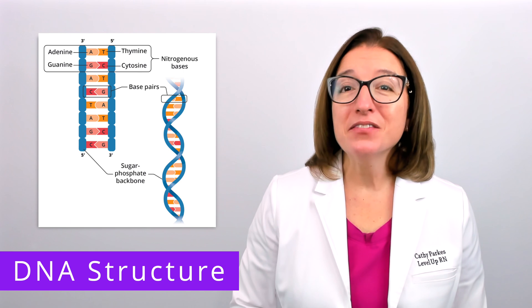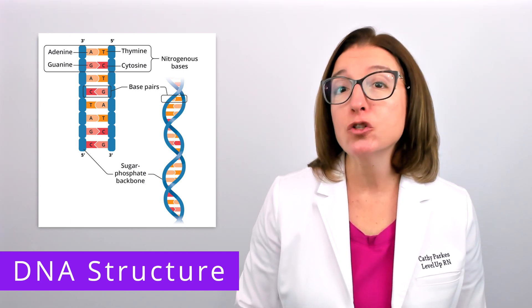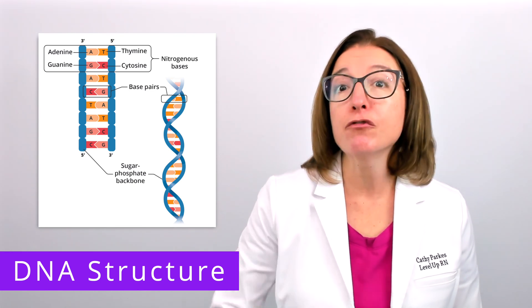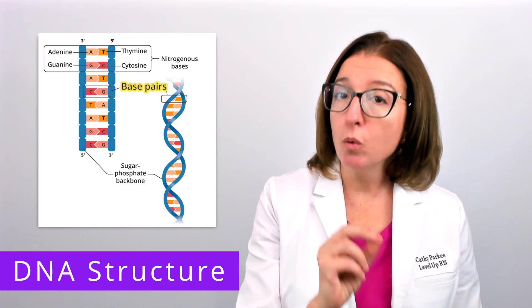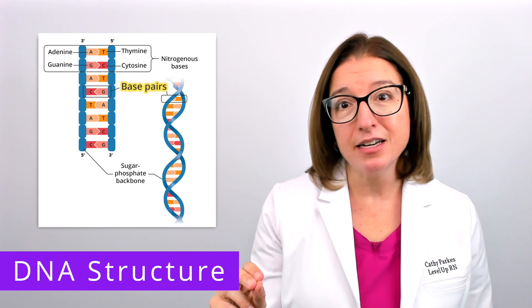The two strands of DNA wind around each other to form a double helix, which resembles a twisted ladder. The rungs of the ladder are formed from base pairing or hydrogen bonding between specific purines on one DNA strand to specific pyrimidines on the other DNA strand.